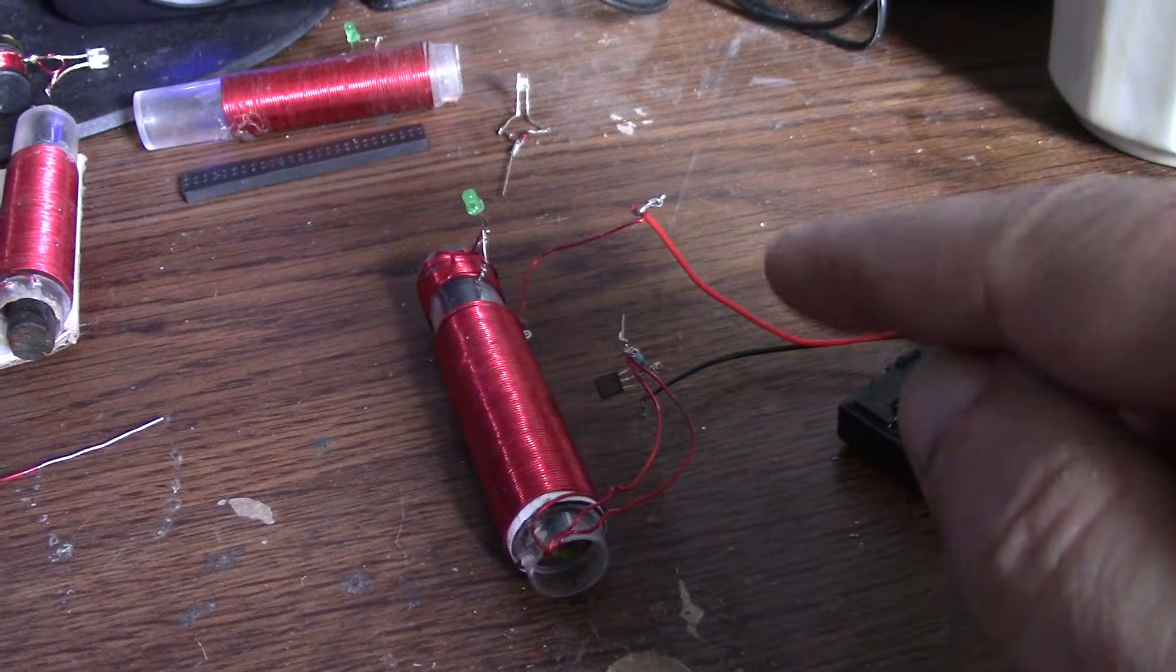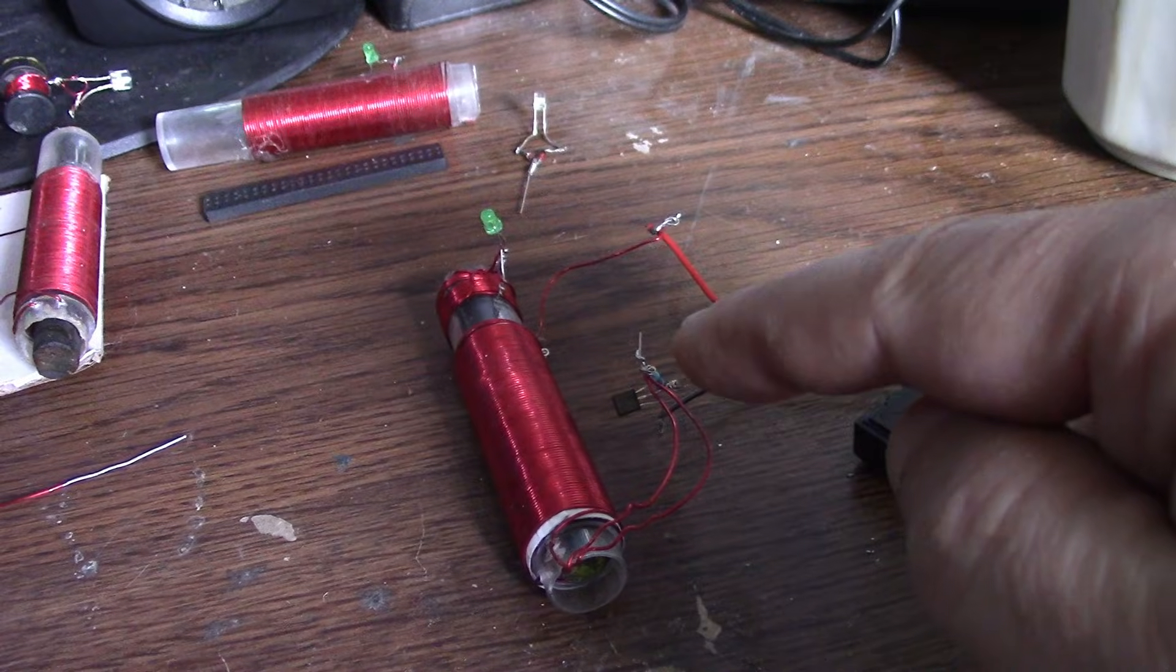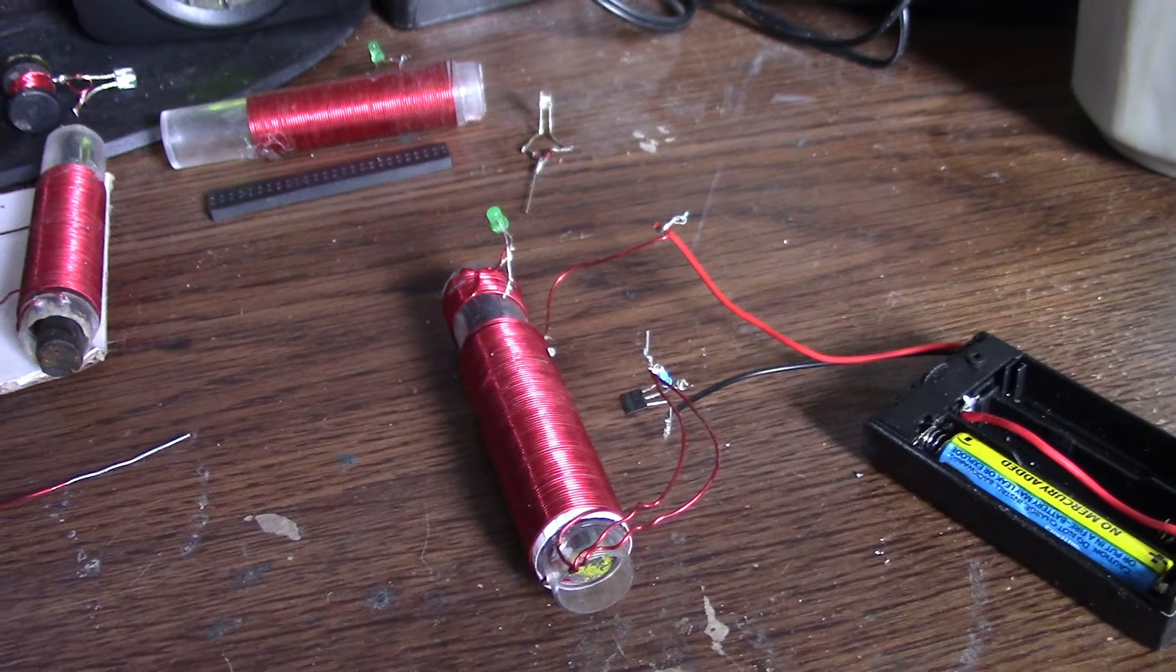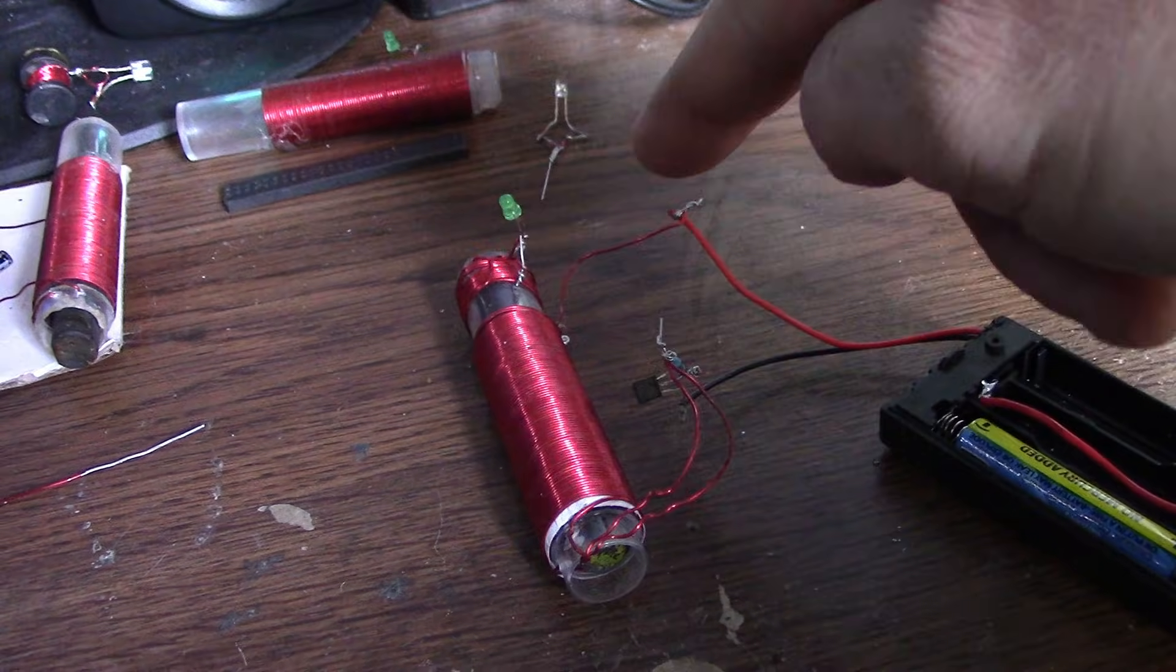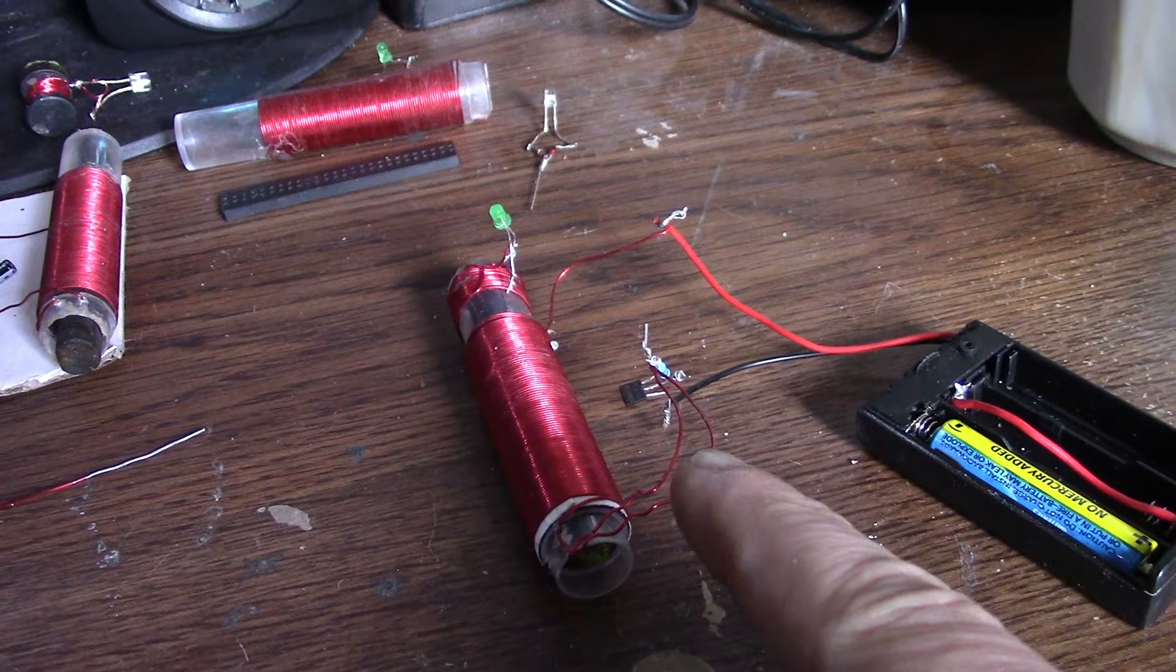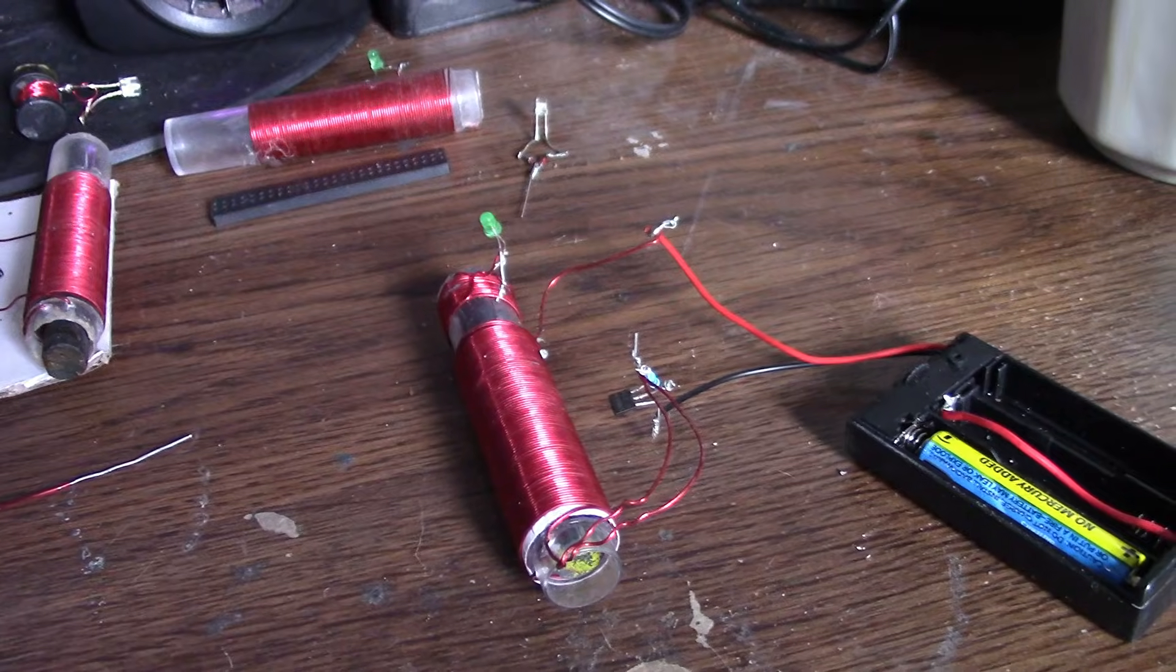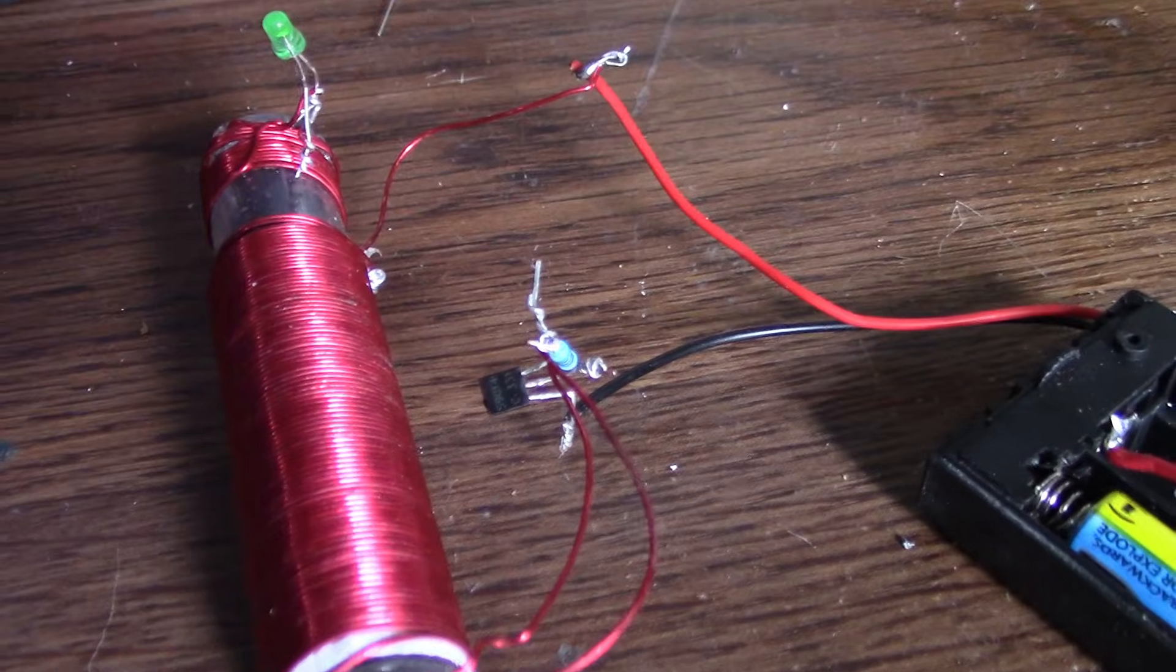One of the wires goes to the collector and one goes to the base of the transistor, which is an NPN, through a 5k resistor. That's it for connections really. Just connect the positive to the two that are joined up there and connect the negative to the emitter of the transistor. This is an S9014 NPN transistor.